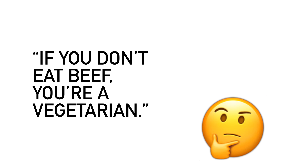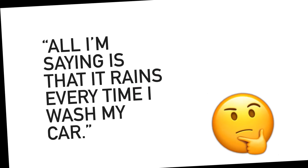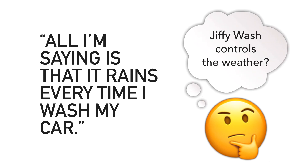Let's look at some examples. Start with: if you don't eat beef, you're a vegetarian. In order for this to be true — assuming vegetarian hasn't changed its meaning — then the only creature that's meat would have to be a cow, meaning other animals like chickens mustn't be meat either. How about this one: your friend doesn't want to wash their car before the big baseball game in case the game gets rained out. What has to be true here? It would have to be true that car washing and weather patterns are directly related — which would be a pretty awesome superpower, but I doubt that Jiffy Wash has it.